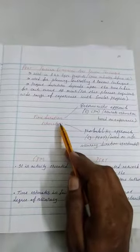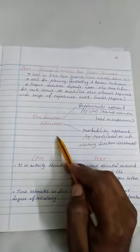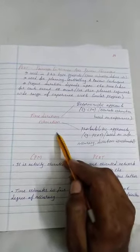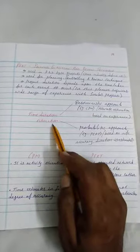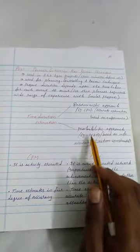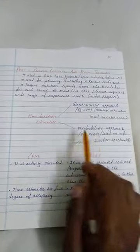PERT is a time-oriented network and CPM is a cost-oriented network. PERT is a time-oriented network. That's why it is a deterministic approach and a probability approach. Two types of approaches there in time duration.